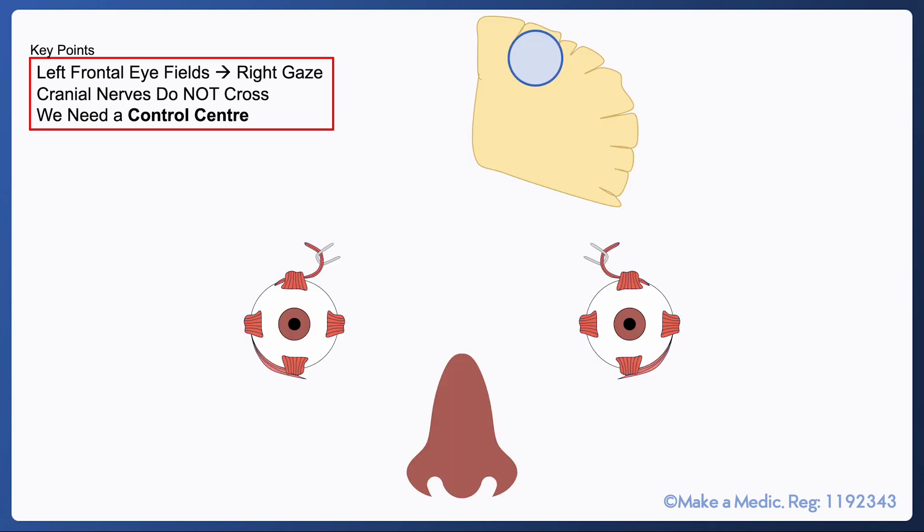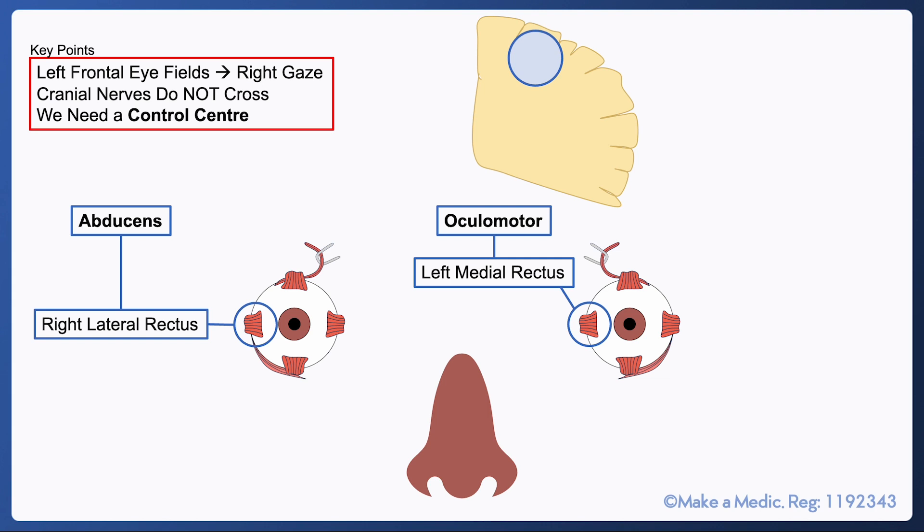The cranial nerves do not cross and hence a control center of some form is needed to ensure that the nerves to both eyes work together to shift gaze accordingly. So here we can see that to shift gaze towards the right we need the left medial rectus and the right lateral rectus to contract simultaneously.